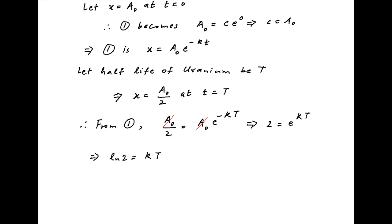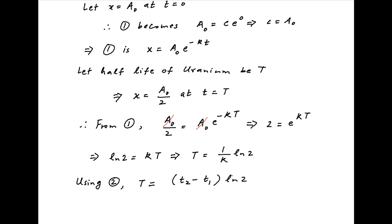Therefore ln 2 is equal to k times capital T, and therefore the half-life capital T is equal to (1/k) times ln 2. Substituting the value of k obtained in Result 2, we get capital T is equal to (t2 minus t1) times ln 2 divided by ln(m1/m2), which is the required answer.